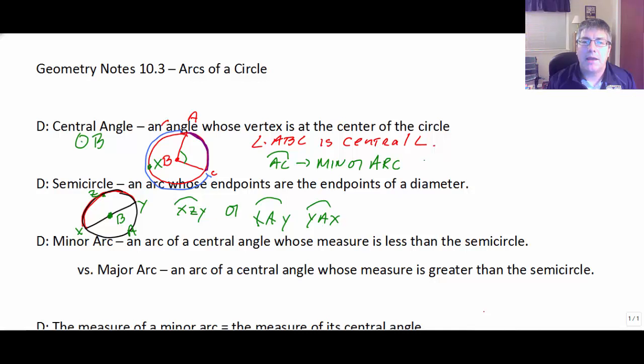And the major arc is an arc whose central angle whose measure is greater than a semicircle. So I'm going to need a point over here so I can identify which direction I'm going. So our major arc is arc AXC. Its measure is more than 180 degrees.